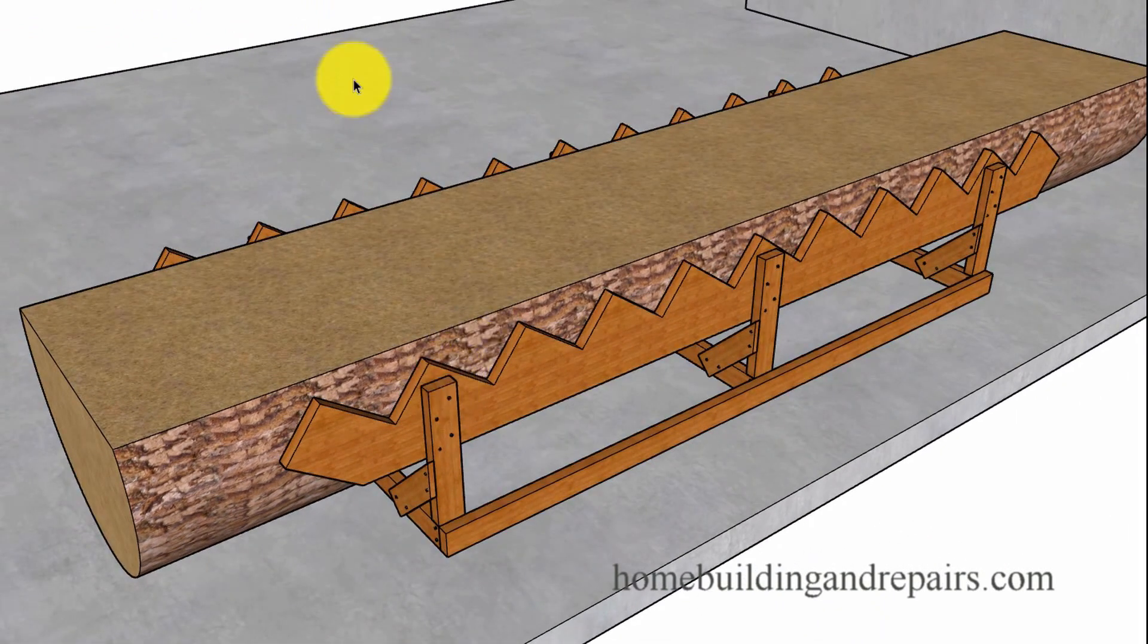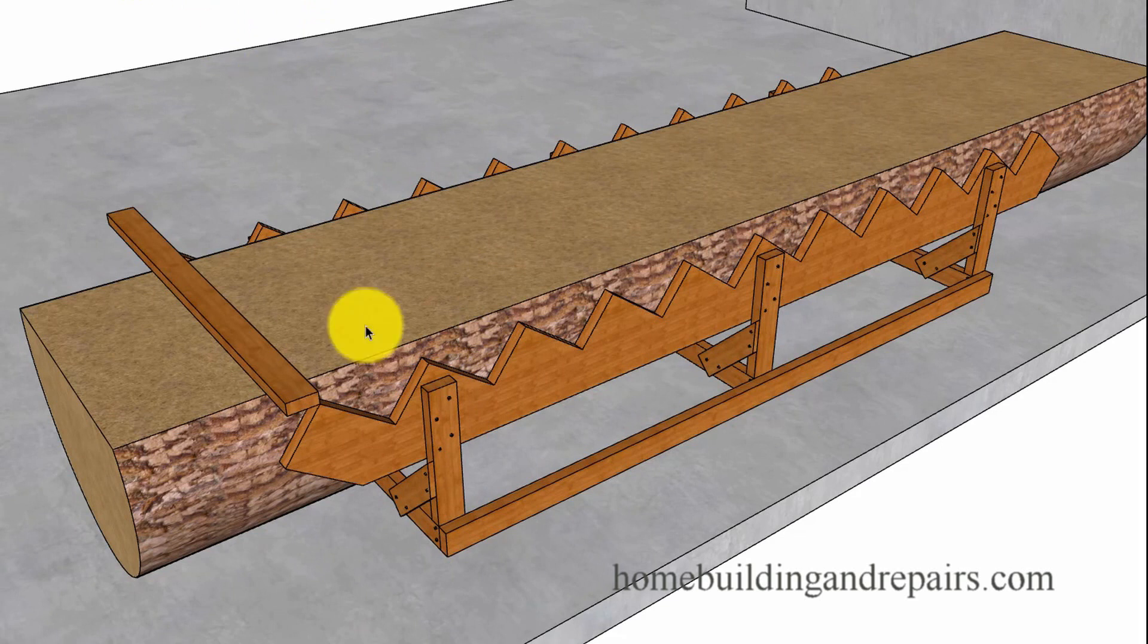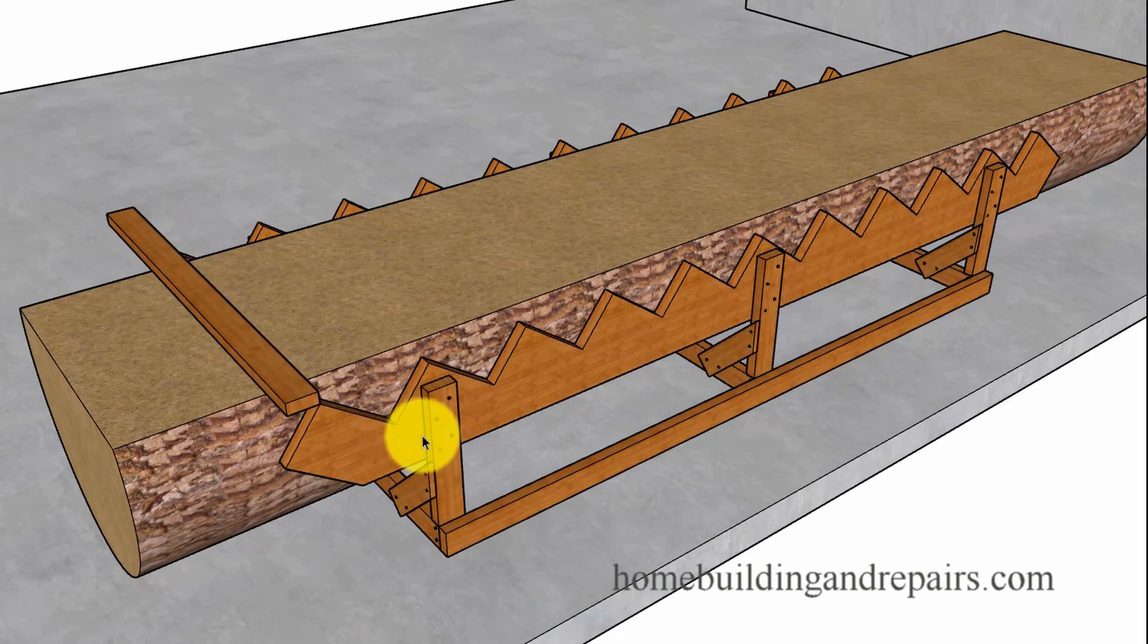Just to give you an idea here, make sure that it is square. You do not want the stringers to be off a little bit. In order to square everything up, you might need to use the 3, 4, 5 rule, where you're going to measure 3 inches, 4 inches, and then 5 inches to make sure it's square.